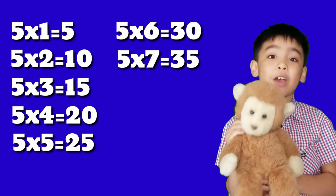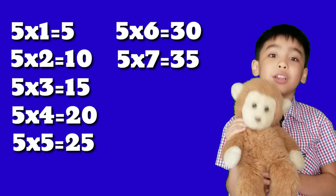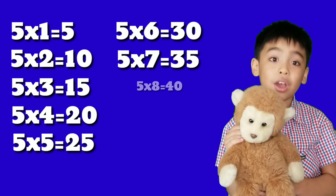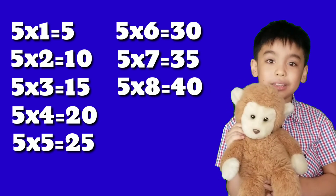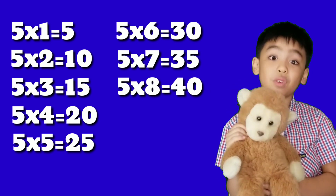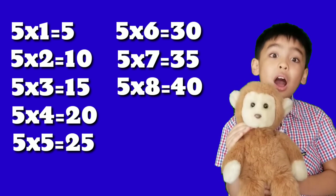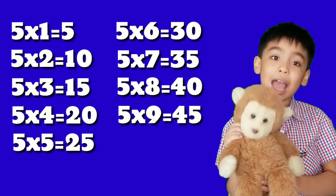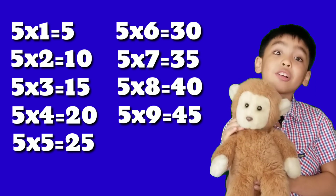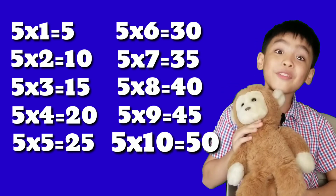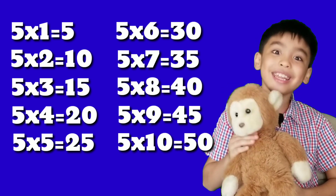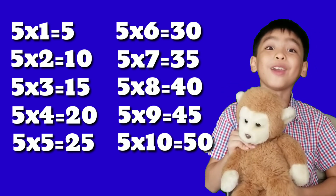5 times 7 equals 35. 5 times 8 equals 40. 5 times 9 equals 45. 5 times 10 equals 50!